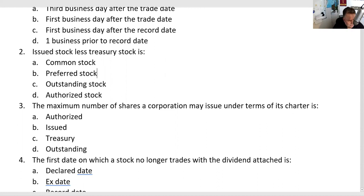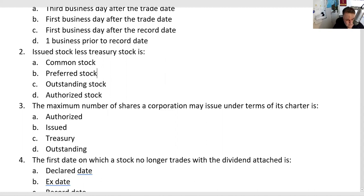If the question said 'shares placed with investors,' that would be issued (answer B). If it said 'shares reacquired or retired by the issuer,' that would be treasury stock (answer C). You should definitely know that treasury stock has no voting rights and pays no dividends. Berkshire Hathaway, for example, is retiring shares into the treasury — either buying them in the secondary market or making a tender offer to existing shareholders. If you don't tender your shares and those shares are retired, your proportional ownership in the company goes up. The answer to question three was A.